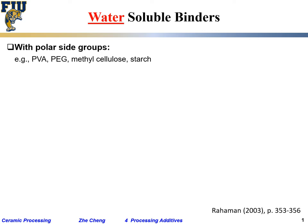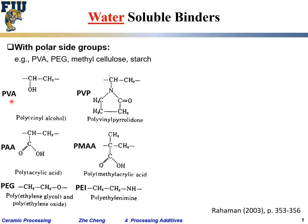Water-soluble binders are binders that have a lot of polar side groups. For example: PVA, PEG, methyl cellulose, and starch. Here we have PVA — polyvinyl alcohol — where an OH group is sticking out everywhere into the water. You can expect it to dissolve in water pretty well, and people can add this one for water-soluble systems to help glue the particles together, giving you flexibility.